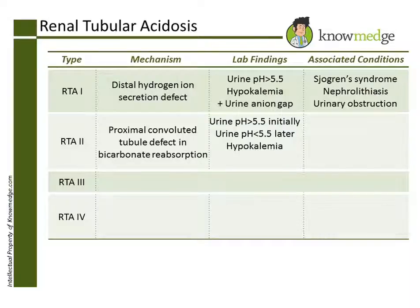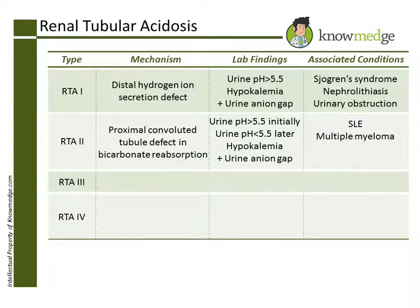Other lab findings include hypokalemia and a positive urine anion gap. Conditions associated with type 2 RTA include systemic lupus erythematosus, multiple myeloma, acetazolamide use, and Fanconi's syndrome.